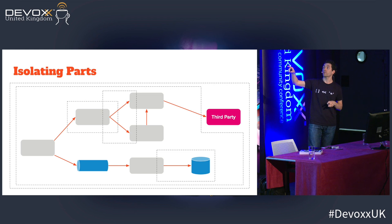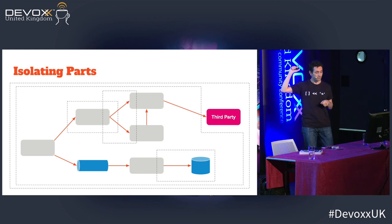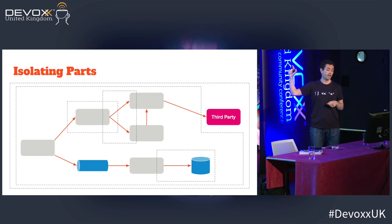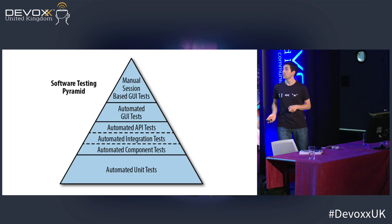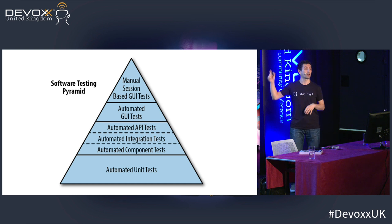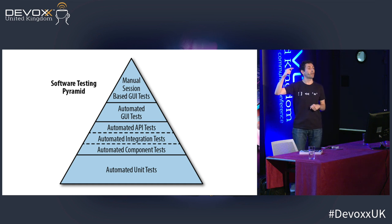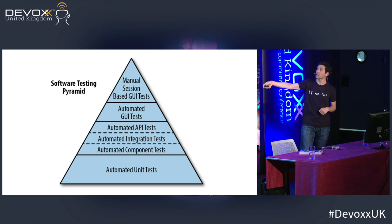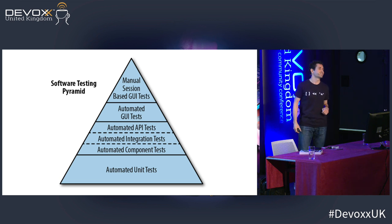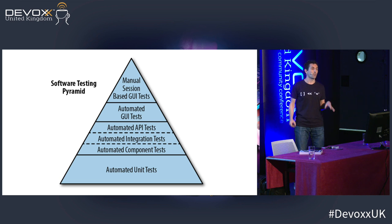Deciding how to dedicate the right amount of effort is a trade-off, but one thing that can help you is the famous testing pyramid. Each of those boundaries is going to align to one of these levels. So you can easily decide how much effort and time you need to put into each isolation boundary by mapping it to one of these levels — for instance, manual tests, we don't want to dedicate that much to that, so we map that to the bigger boundary.